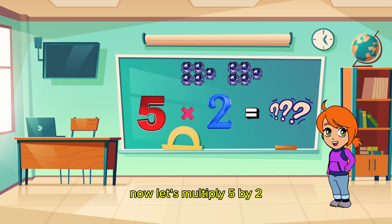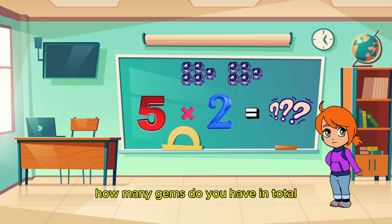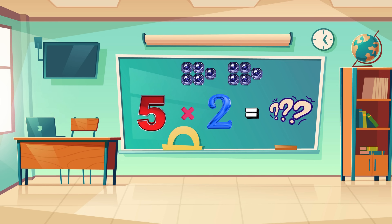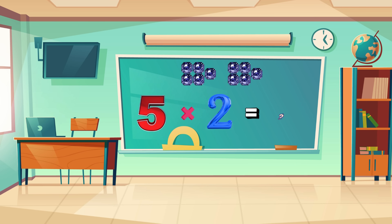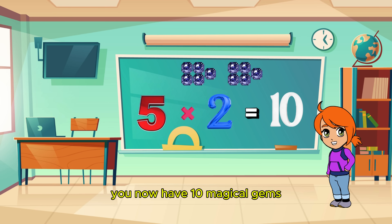Now let's multiply 5 by 2. Imagine you have 2 groups of 5 gems each. How many gems do you have in total? Exactly! 5 times 2 equals 10! You now have 10 magical gems!